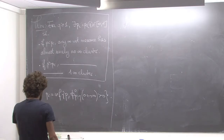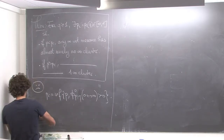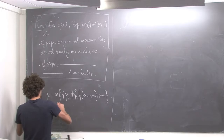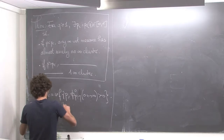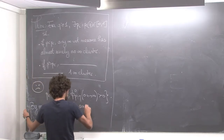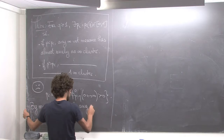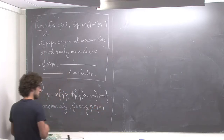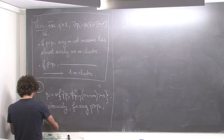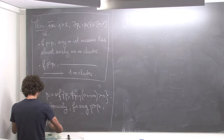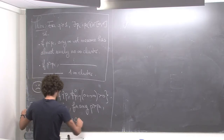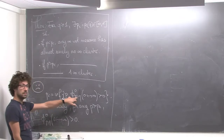So by monotonicity, for any P which is strictly larger than P_c, I get that phi_0(P,Q) of 0 connected to infinity is strictly positive. So this is monotonicity in P — that's the first property we use about our measures.